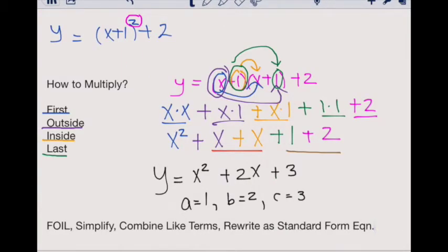To summarize, first we'll FOIL, then we'll simplify, combine like terms, and rewrite as a standard equation.